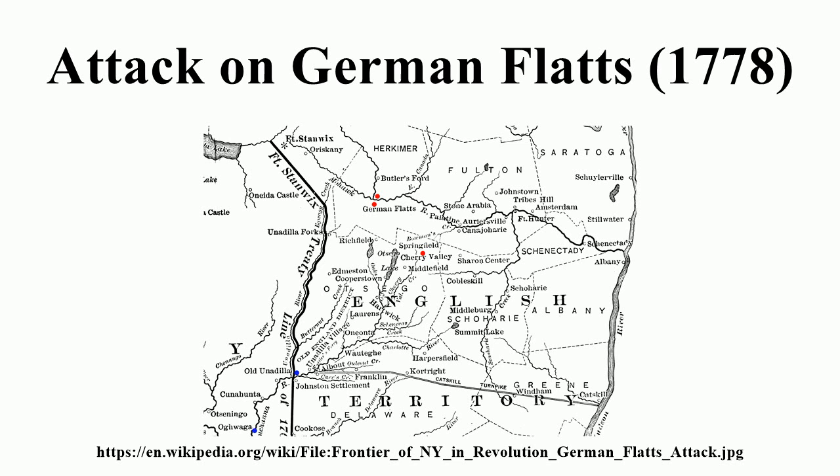With the failure of British General John Burgoyne's campaign to the Hudson after the Battles of Saratoga in October 1777, the American Revolutionary War in upstate New York became a frontier war. British leaders in the province of Quebec supported Loyalist and Native American partisan fighters with supplies and armaments. During the winter of 1777–78, Brandt and other British-allied Indians developed plans to attack frontier settlements in New York and Pennsylvania.